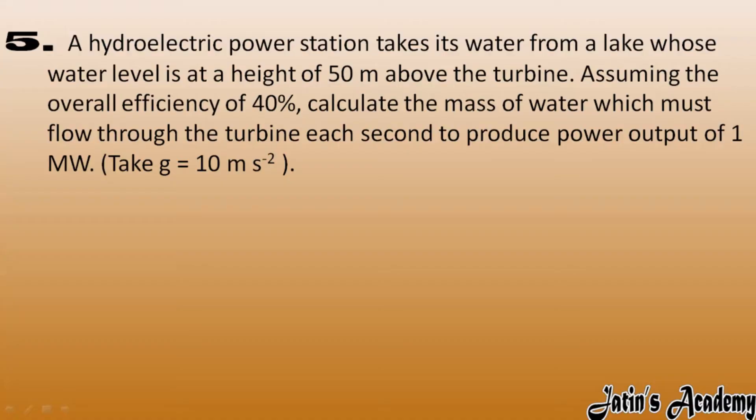A hydroelectric power station takes its water from a lake whose water level is at a height of 50 meters above the turbine. Assuming the overall efficiency is 40 percent, calculate the mass of water which must flow through the turbine in each second to produce a power output of 1 megawatt. Take G value as 10 meter per second square.